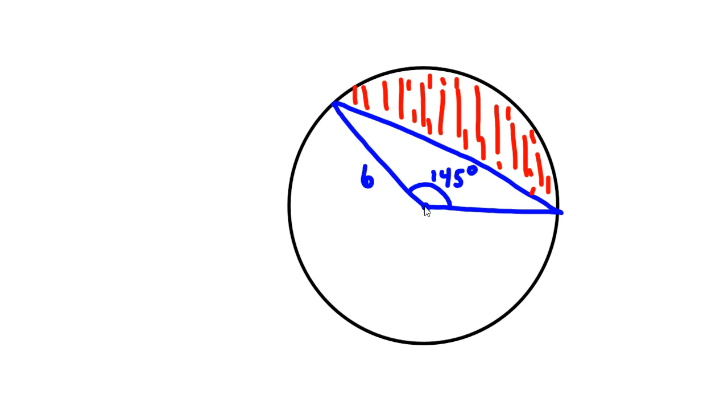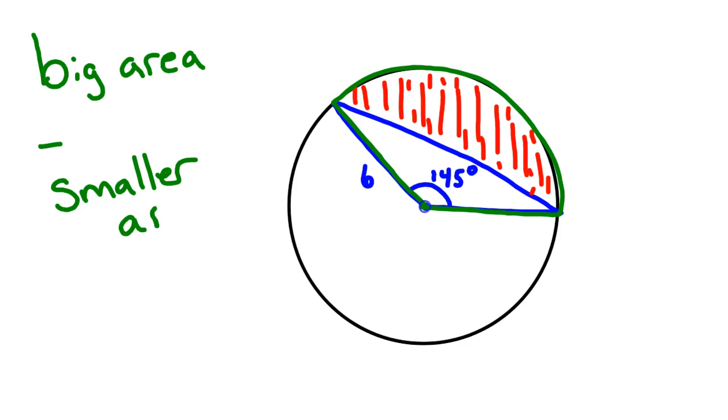Now, to find the area, we have two shapes there. We have the sector, and we have the triangle. The triangle's in blue. I'll do the sector in green so you can see. So we have two basic shapes, and here's the sector. We're going to take the green minus the blue. So when you're doing this, you always take the big area minus the small area, or smaller area. And that gives you the area between them.